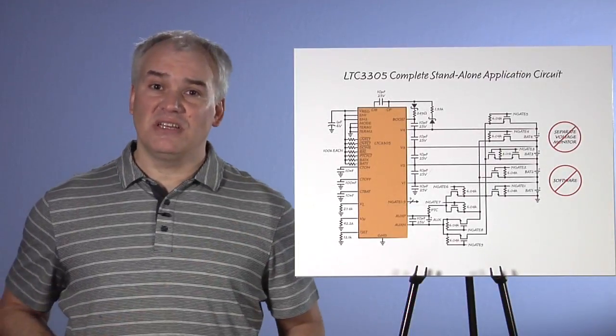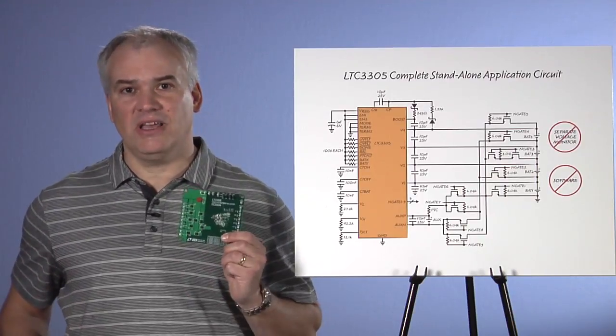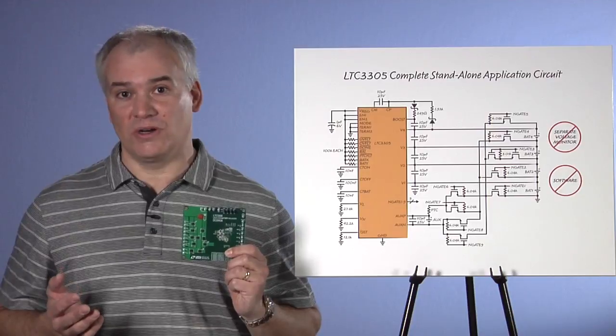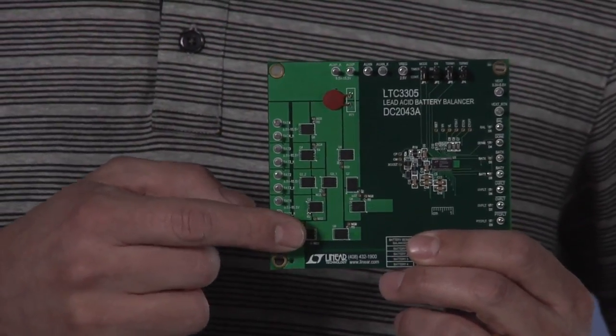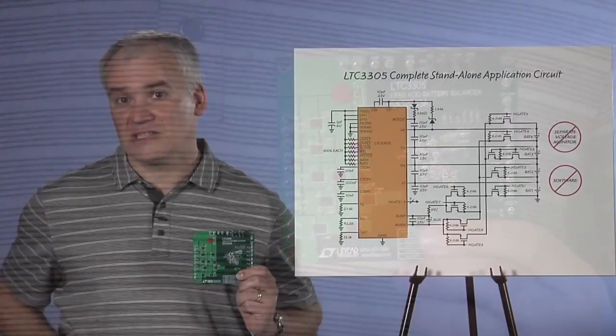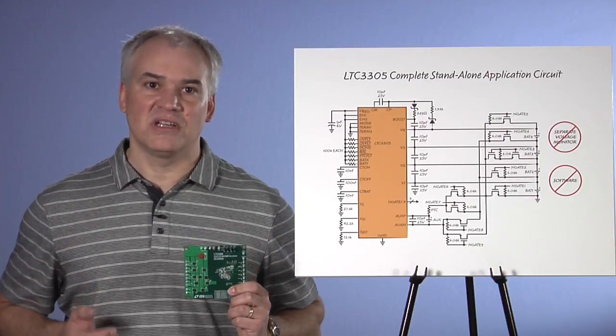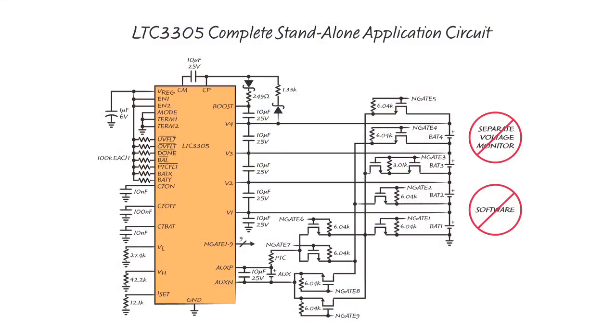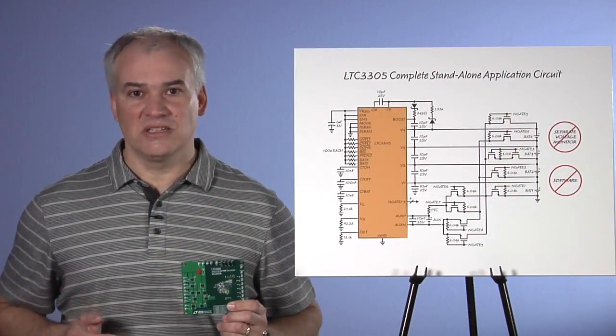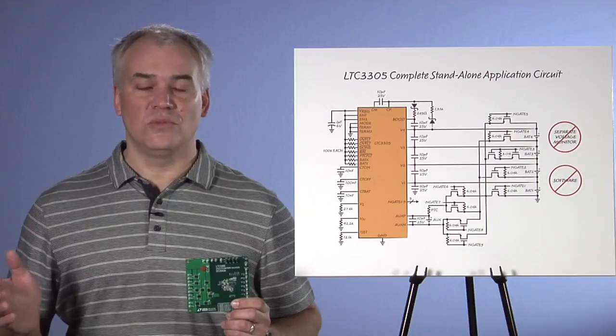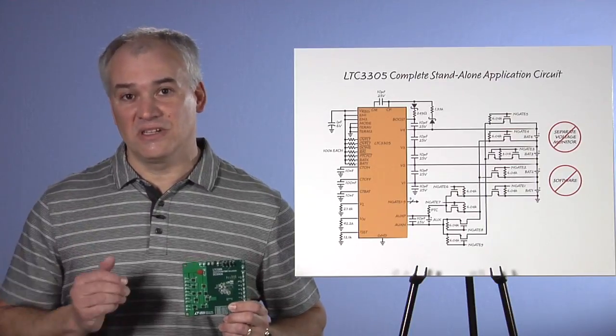Here's the complete LTC 3305 application schematic, and here in my hand is the LTC 3305 demo board. As you can see, there are 10 FETs, the PTC, and a handful of R's and C's to program various timing and fault detection parameters. For more information on those, I encourage you to read the datasheet. The solution is completely standalone. You just need to hook it up to your four battery stack and whatever you choose for the aux cell. You don't need a separate voltage monitor, because the LTC 3305 does that for you. And I hate to break it to you software guys, you don't need any software, micro, algorithm, or GUI. The LTC 3305 does all that for you too.